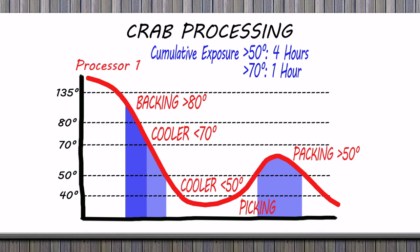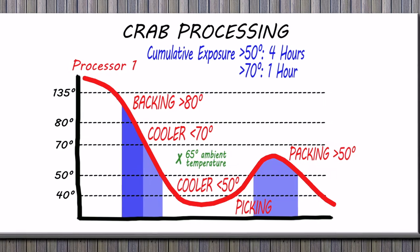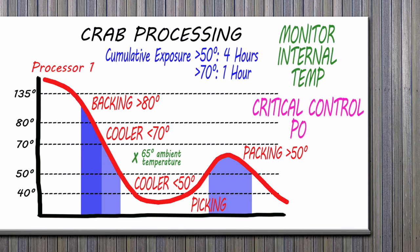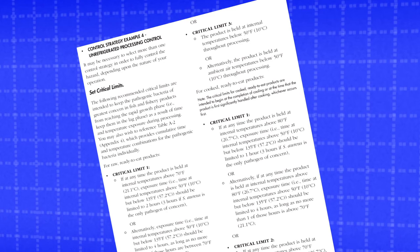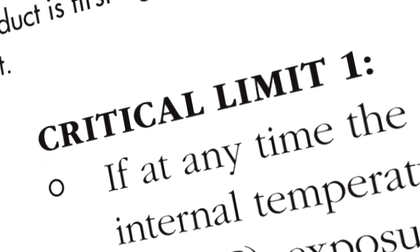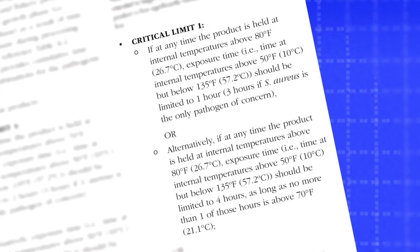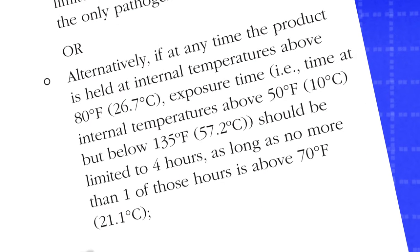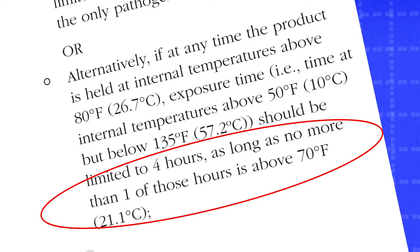Because the internal temperature of the product exceeds the ambient air processing temperature during unrefrigerated processing, this processor decided to monitor internal product temperatures. The processor also determines that unrefrigerated processing should be listed as a critical control point in the HACCP plan. To establish appropriate critical limits, the processor looks up the options under Cooked Ready-to-Eat and chooses Critical Limit 1. The first option is very strict and assumes no additional handling after initial backing. Since the backed crab cools to less than 70 degrees within one hour before picking and packing, the processor chooses the alternative option, which allows a total of four hours of processing time so long as no more than one of those hours is above 70 degrees Fahrenheit.